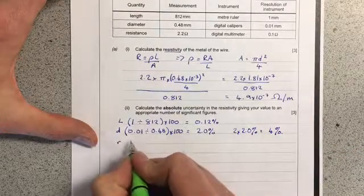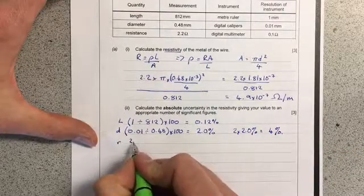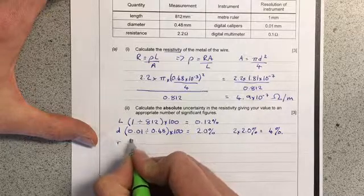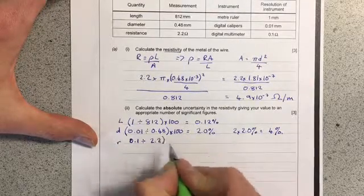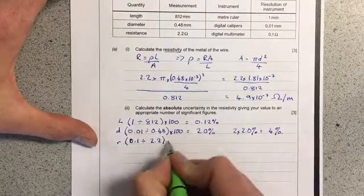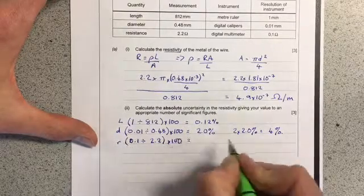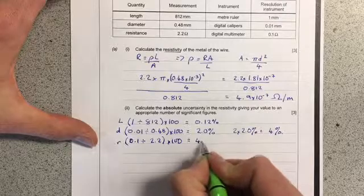For resistance: 0.1 divided by 2.2 times 100 gives 4.6%.